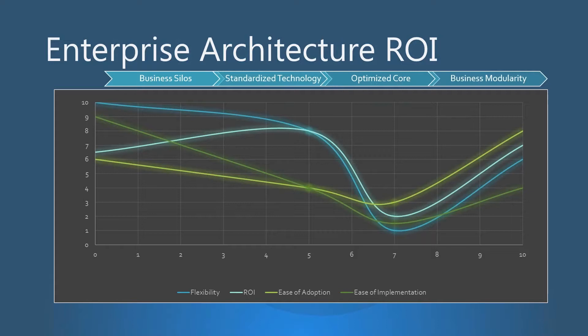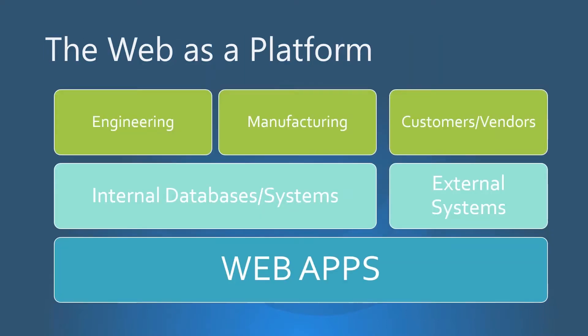And moving further to the right, you can see things are getting better. This is business modularity — the idea of using the web as a platform. Business modularity is leveraging your existing systems and building a platform on top of them. So this diagram shows that instead of trying to synchronize all of your different systems, we leverage their unique capabilities to create powerful web applications.